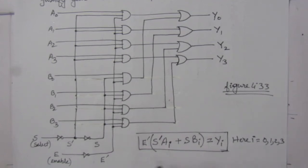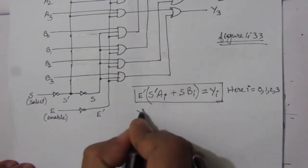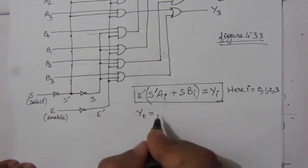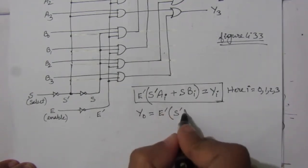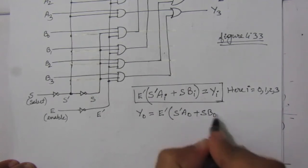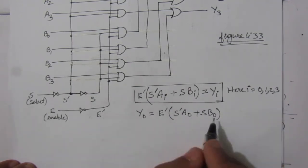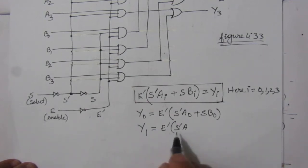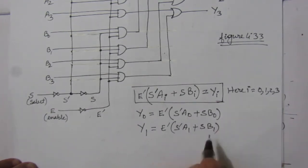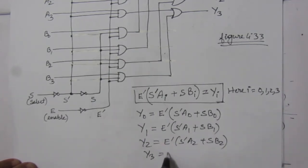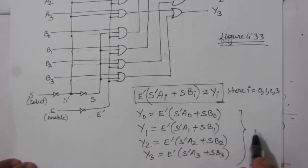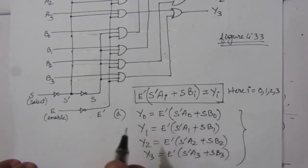From the generalized expression, for Y0 (i=0): Y0 = E-bar · (S-bar · A0 + S · B0). For Y1: Y1 = E-bar · (S-bar · A1 + S · B1). Similarly Y2 = E-bar · (S-bar · A2 + S · B2), and Y3 = E-bar · (S-bar · A3 + S · B3). These are the four outputs and this is the solution to the first part of the problem.